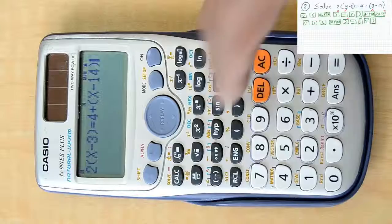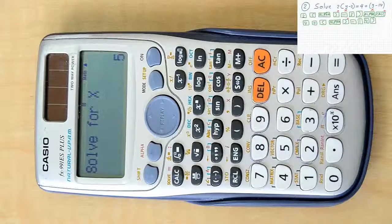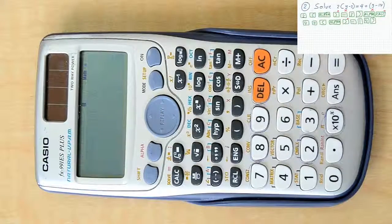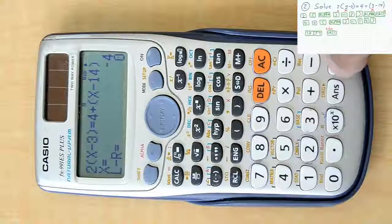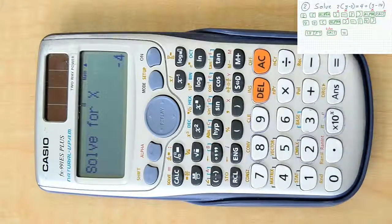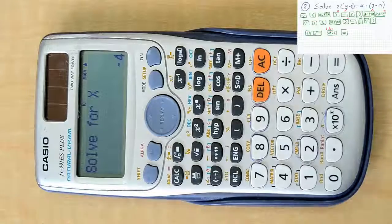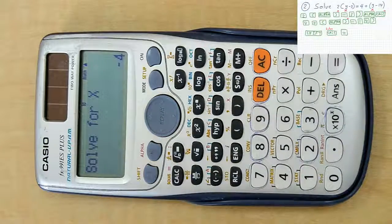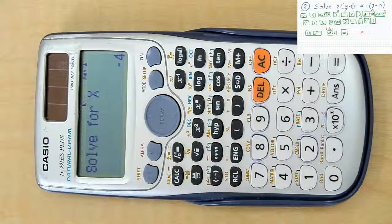And then when we completed all of this, we can press shift, solve, equal. And you will have your answer with your calculator as x equals negative 4.